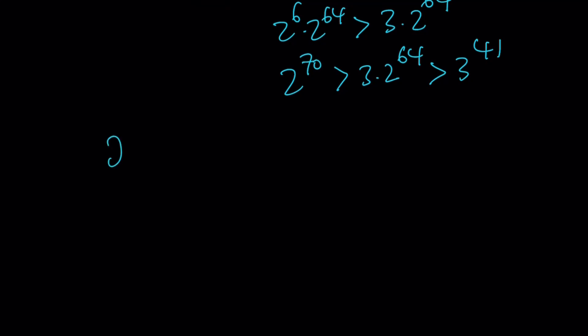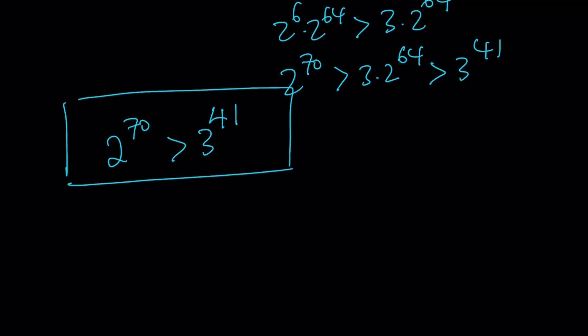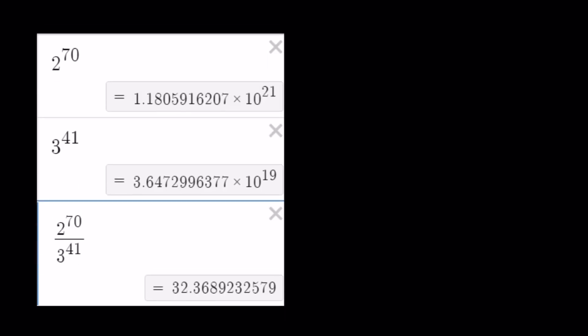Happy ending! The conclusion is 2 to the power of 70 is greater than 3 to the power of 41. The larger number is 2 to the power of 70. And this should bring us to the end of the video, but I'm also going to show you the numerical values for comparison. We found that 2 to the power of 70 is greater than 3 to the power of 41 — numerically verified. I also looked at their ratio, which gives us a better idea of how many times bigger the larger number is. In this case, it's about 32 times.